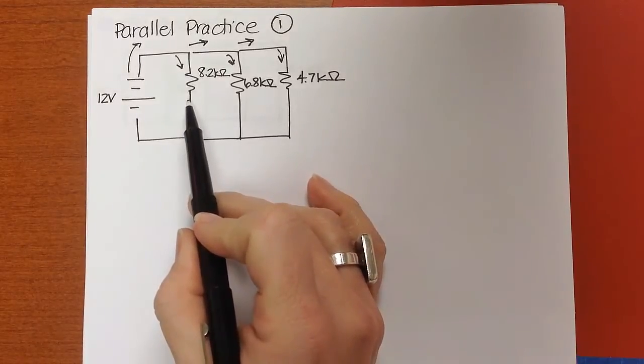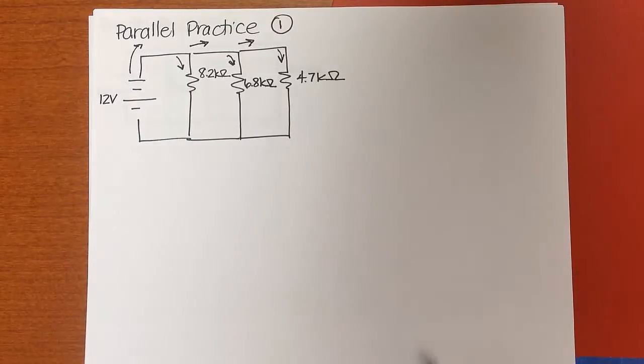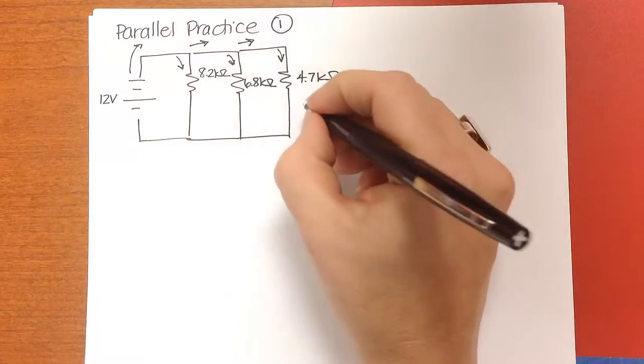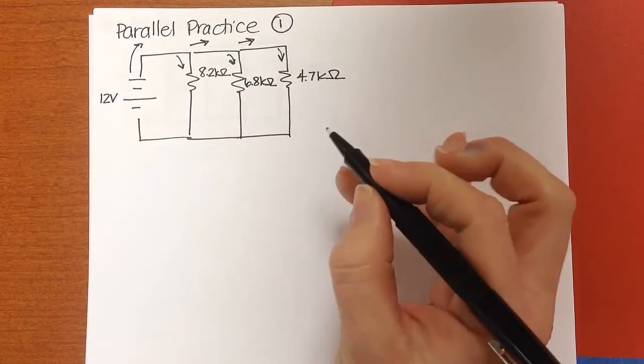This branch has the highest resistance, and this branch has the lowest resistance. Remember that electrons are going to take the path of least resistance. So I expect that this current in the 4.7 kiloohm branch will be highest.